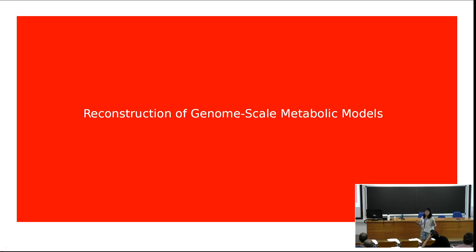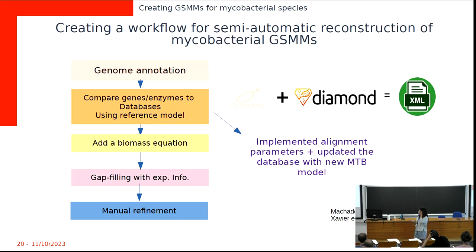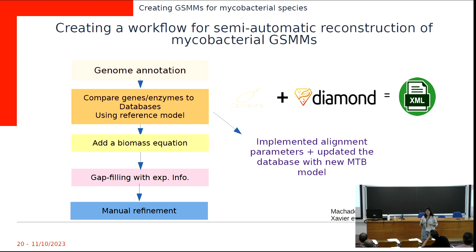We then started reconstructing genome-scale metabolic models, which is a long and tedious process. Since we originally wanted to do it for 200 species, we tried automatic tools. We looked at CARFME, from 2018, which is widely used. It aligns the genome to a database and creates a connected network.